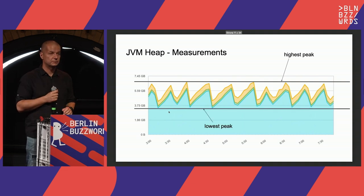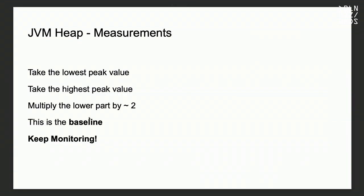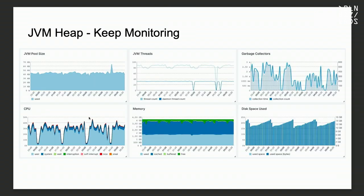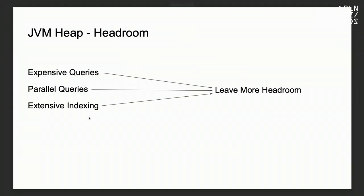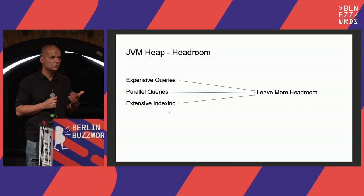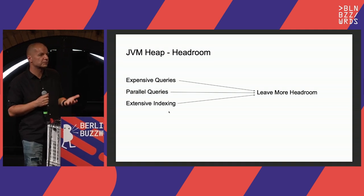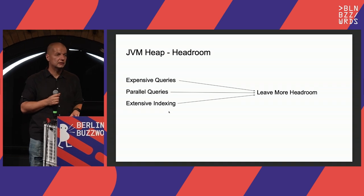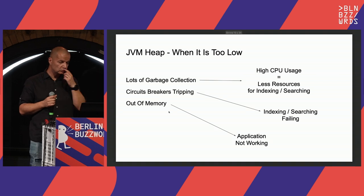Take the highest peak and the lowest peak usage. Multiply the lower part by two as your baseline. Keep monitoring because things will change. Also remember headroom — depending on your traffic, queries, and indexing extensiveness, you need headroom to allow Solr to properly work. The more expensive your queries, the more headroom you need, and this will show up in your monitoring tool.